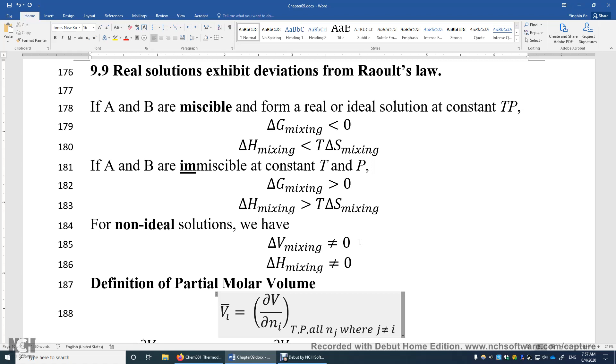So when delta U is positive, that means these A and B components just do not like each other. The attraction between A and B is smaller than the attraction between A and A, and it's also smaller than the attraction between B and B. And then you have a lower boiling point.